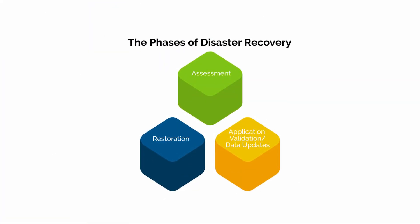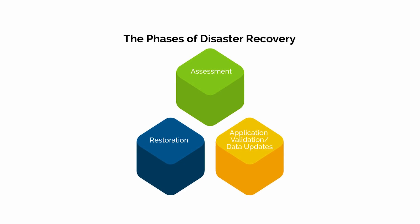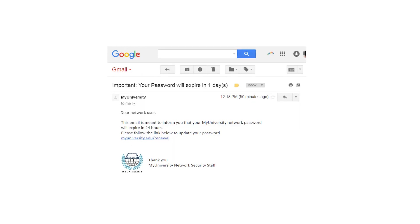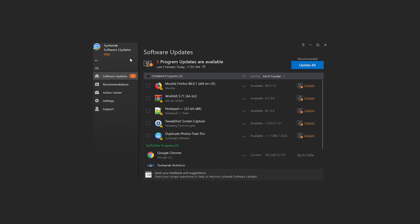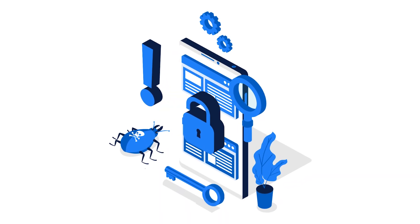Finally, after successfully removing ransomware, the last step involves learning from the experience to improve defense against future threats. Conducting a post-incident analysis would help you identify the entry point of the ransomware, whether through a phishing email, unpatched software, or other vulnerabilities. Implementing lessons learned, improving cybersecurity protocols, and consistently educating users on cybersecurity best practices would contribute to a powerful defense against evolving cyber threats.